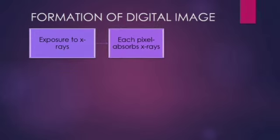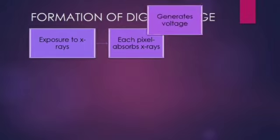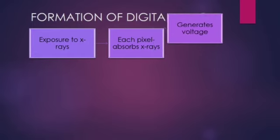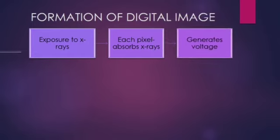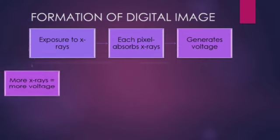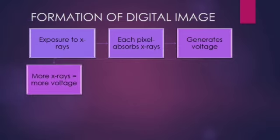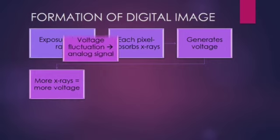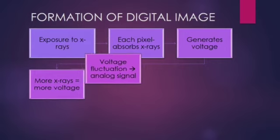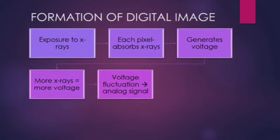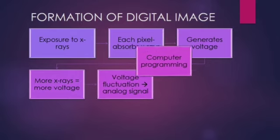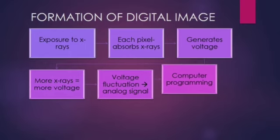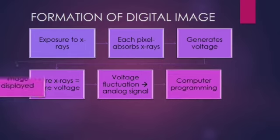So in case if it is a soft tissue structure, then more amount of x-rays is going to hit a pixel. And in case if it is a denser structure, only a few amount of x-rays will hit the pixel. So these x-rays that are being absorbed is going to generate an electric voltage. And this voltage is going to be proportional to the amount of x-rays that have been absorbed. The difference in the voltage, the fluctuation is going to produce an analog signal that will be read by the computer programming software to give you the final image displayed for the diagnosis.